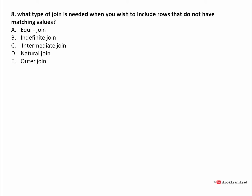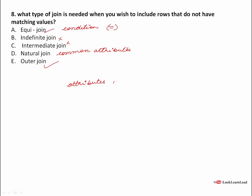Next: what type of join is needed when you wish to include rows that do not have matching values? For an equi join, there must be a matching condition with an equal-to sign. Indefinite join and intermediate join are not the answer. For attributes where matching values are not there, those attributes are filled with null.